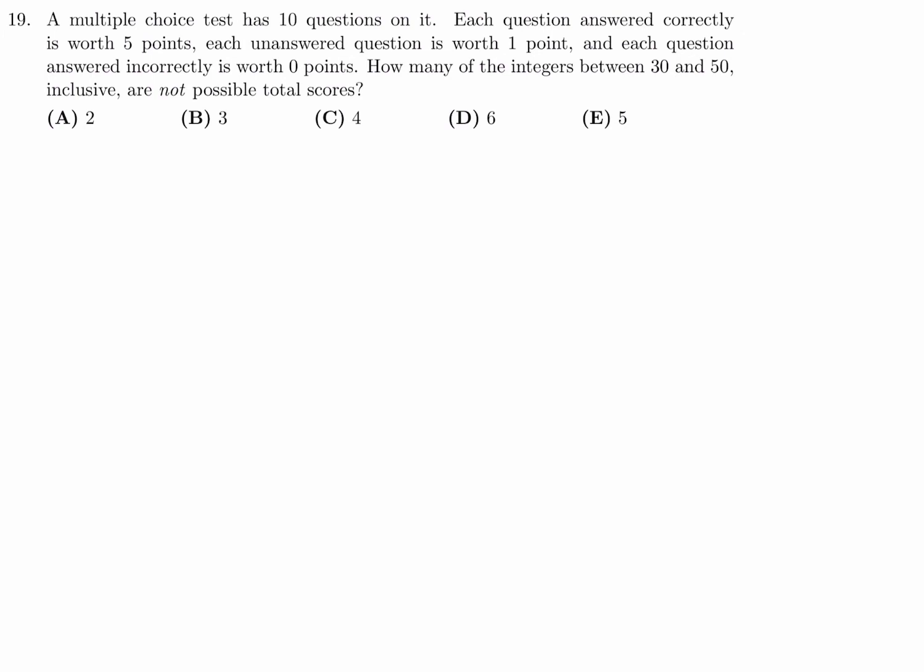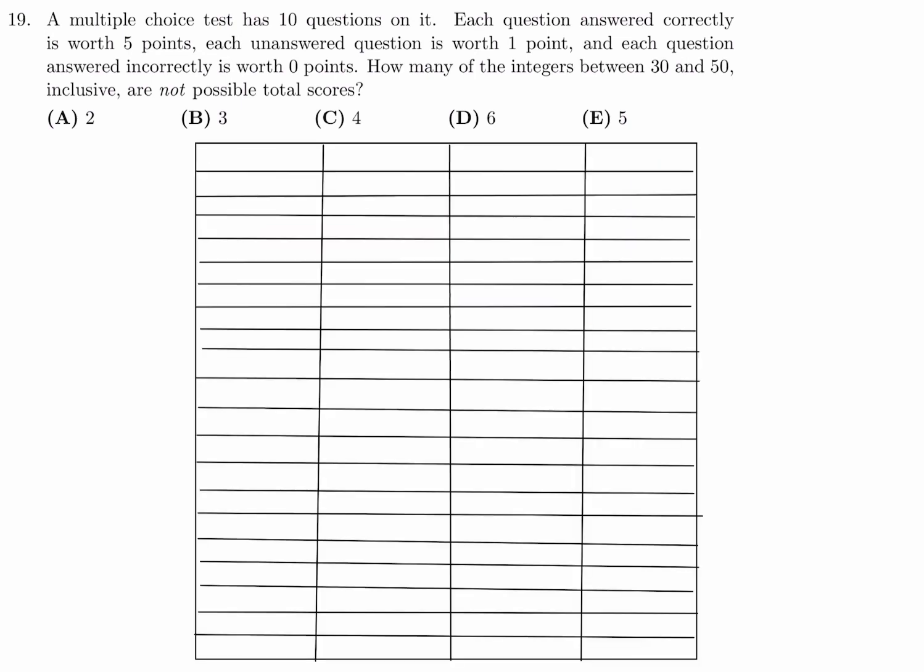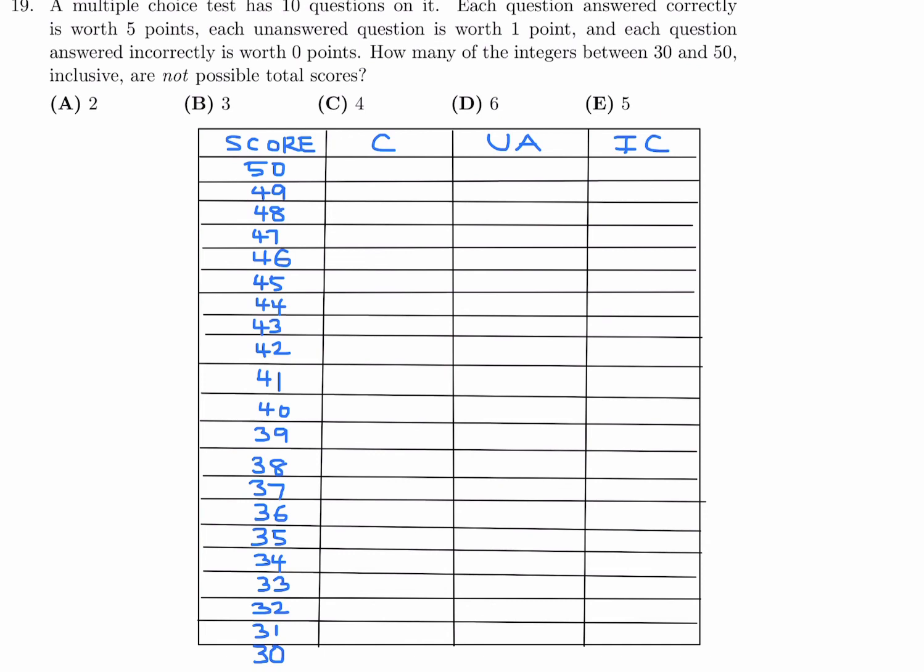A multiple choice test has 10 questions. Each question answered correctly is worth 5, unanswered is worth 1, incorrect is 0. How many of the integers between 30 and 50 inclusive are not possible total scores? Alright, so we may be able to get this in a very logical way by making a table. So this is the score, this is the number of correct, unanswered, and incorrect. The scores are from 50 all the way down to 30.